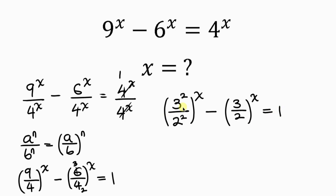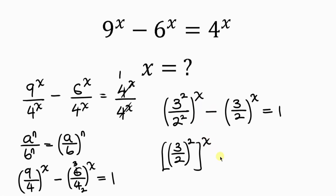Now the first term has a common power of 2, so this can be written as 3 over 2 with a combined power of 2, and the whole expression is raised to x. So we have 3 over 2 raised to the 2x, minus 3 over 2 raised to the x, equal to 1.